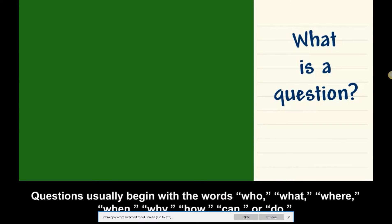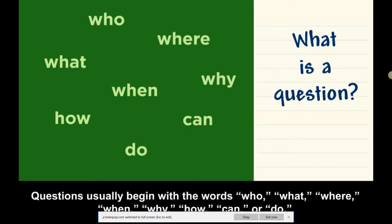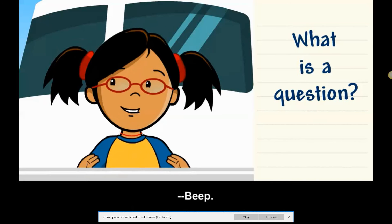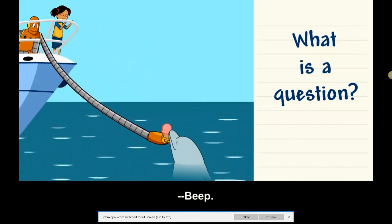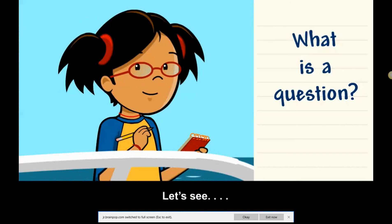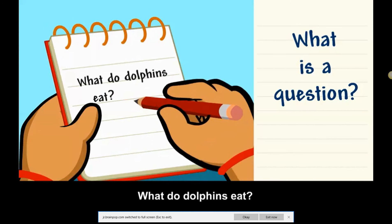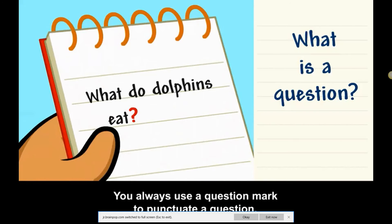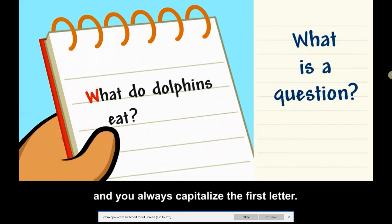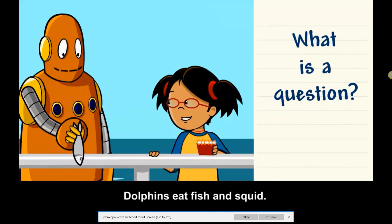Questions usually begin with the words who, what, where, when, why, how, can, or do. Moby, I don't think dolphins eat ice cream. Let's see. What do dolphins eat? You always use a question mark to punctuate a question. And you always capitalize the first letter. Dolphins eat fish and squid.